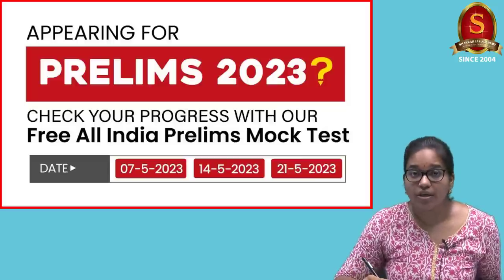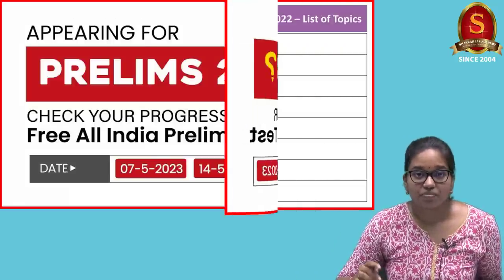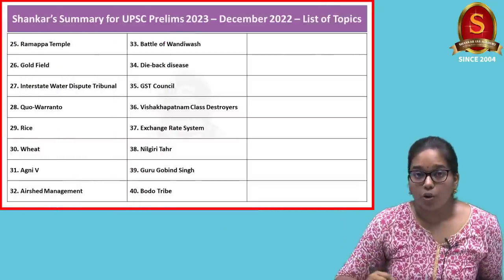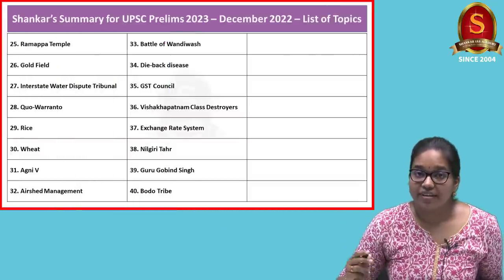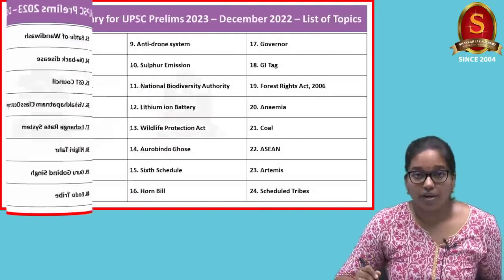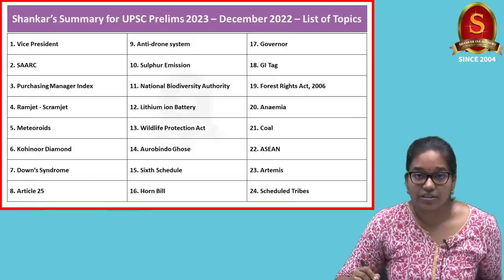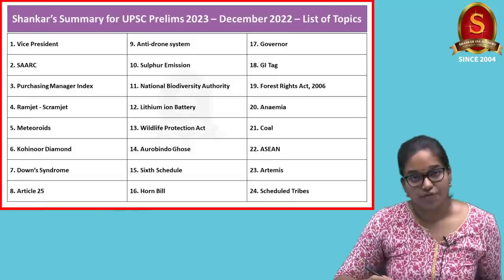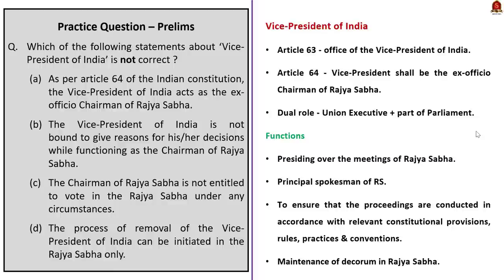With this note, we will begin the discussion. These are the topics taken from the December 2022 current affairs. The first question is about the Vice President of India. Four options are given and we have to find which one is incorrect about the Vice President of India.